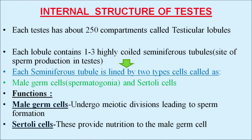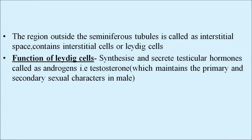Male germ cells undergo meiotic division leading to sperm formation — these are the cells that make sperm. Sertoli cells provide nutrition to the developing male germ cells. The region outside the seminiferous tubules is called the interstitial space, which contains interstitial cells or Leydig cells. The function of Leydig cells is to synthesize and secrete the testicular hormone called androgens, that is testosterone, which helps in maintenance of primary and secondary sexual characters in males.